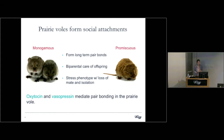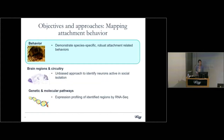They identified two neuropeptides — oxytocin and vasopressin — that are very important for allowing the monogamous species to pair bond. So this is where we are in terms of understanding attachment behavior. What I'm going to go through in my talk is to show how we start with behavior and then map what's happening in the brain down to the molecular level, and why the prairie vole makes an ideal system for studying this.